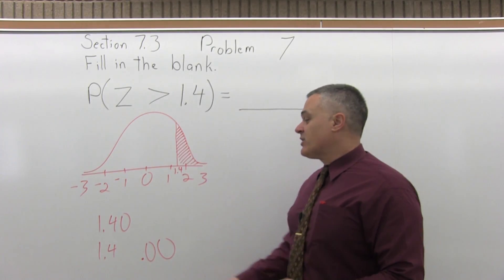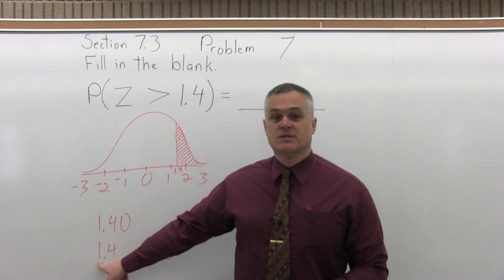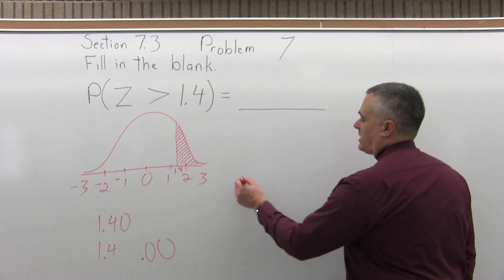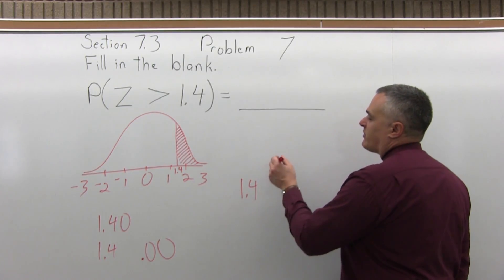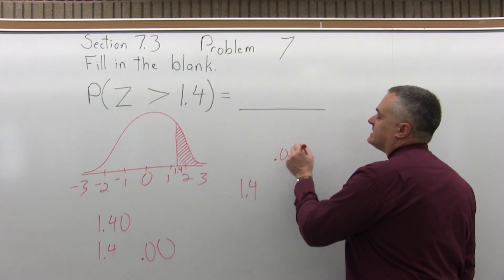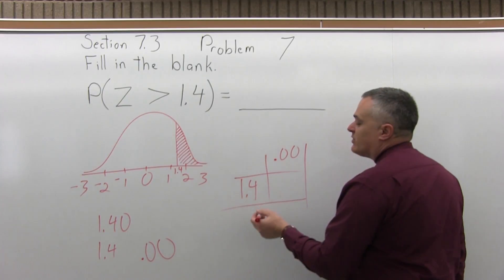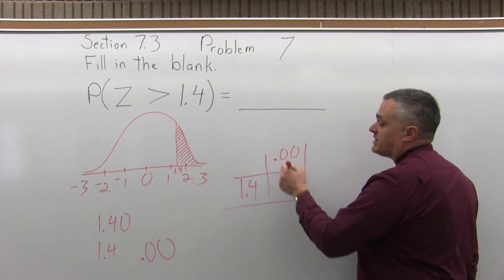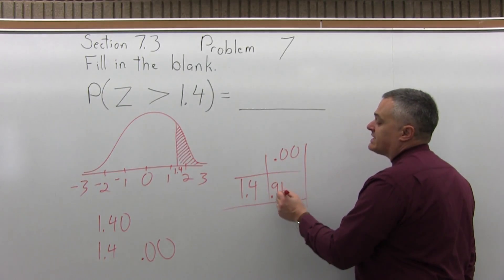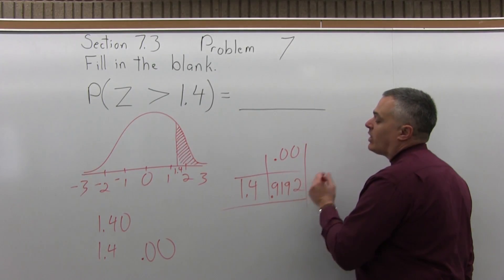And now we go to the chart, the positive portion of the chart, because it's a positive value. We'll go to the positive 1.4 row, probably halfway down the chart approximately. The 00 column, which is the very first column. And see where that 1.4 column and the .00 row intersect. And they intersect at .9192.